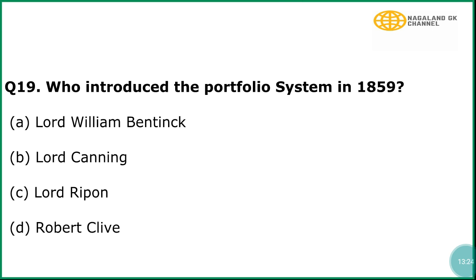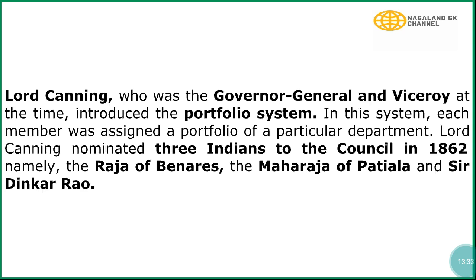Question number 19: Who introduced the portfolio system in 1859? The correct answer is option number B, Lord Canning. In explanation, Lord Canning, who was the Governor General and Viceroy at the time, introduced the portfolio system. In this system, each member was assigned a portfolio of a particular department. Lord Canning nominated three Indians to the council in 1862, namely the Raja of Banaras, the Maharaja of Patiala, and Sir Dinkar Rao.